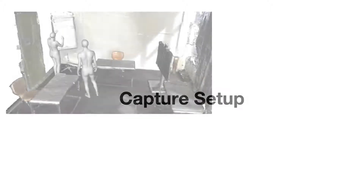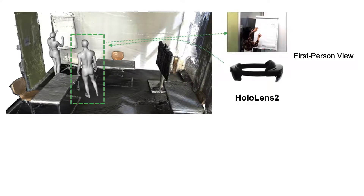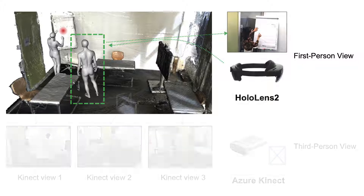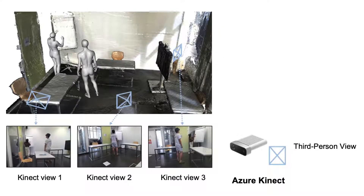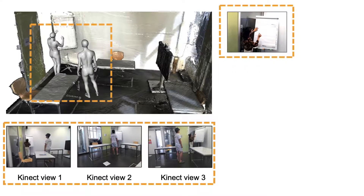The dataset is captured with state-of-the-art hardware. Given two interacting subjects in indoor environments, we ask one subject to wear a HoloLens 2 headset and capture the first-person view images of the second person. Meanwhile, the HoloLens also tracks the eye-gaze of the camera wearer. Three Kinect cameras capture the interactions from multiple third-person views. Given the multi-view RGBD videos and the HoloLens images, we reconstruct the 3D full-body shape and motions for both interacting subjects.